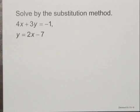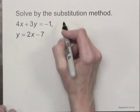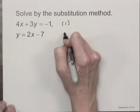Solve by the substitution method. We have the system of equations 4x plus 3y equals negative 1, and y equals 2x minus 7. We'll label the equations 1 and 2.